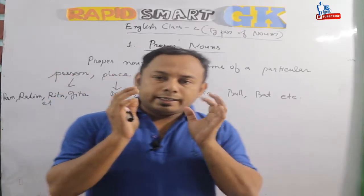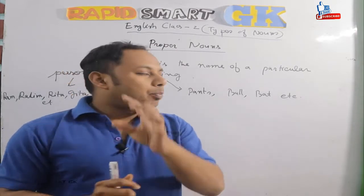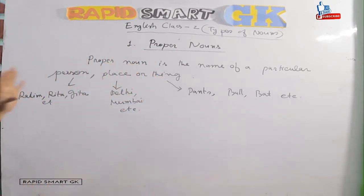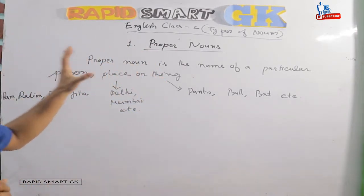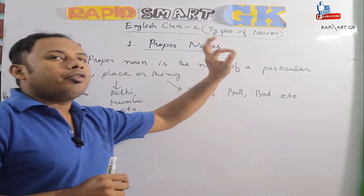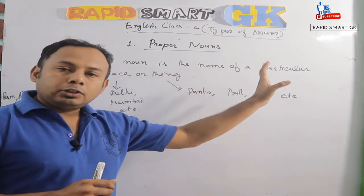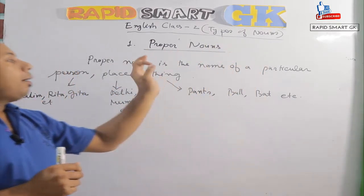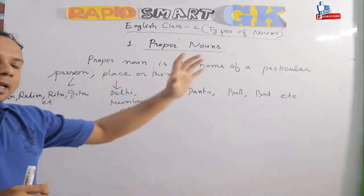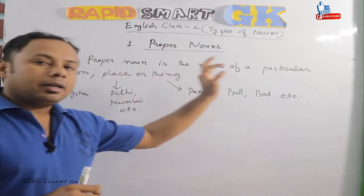So, we will discuss the question: what is a noun? The answer is that a noun is the name of a particular person. It may be a place, a particular place, or a particular thing.